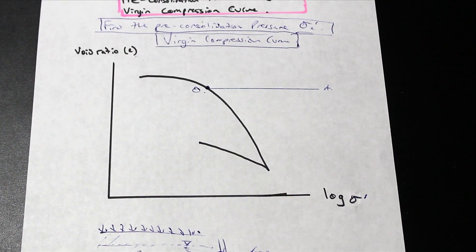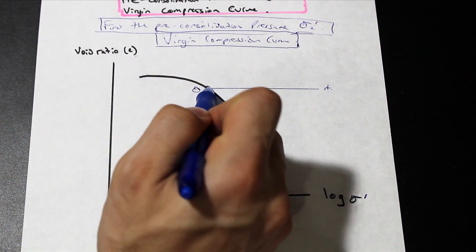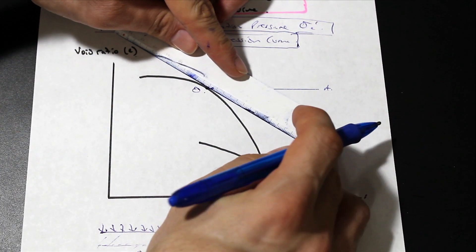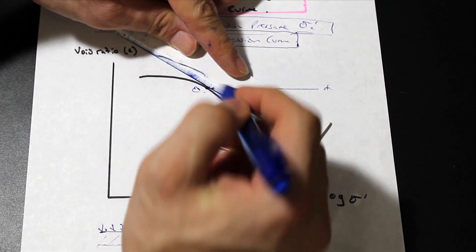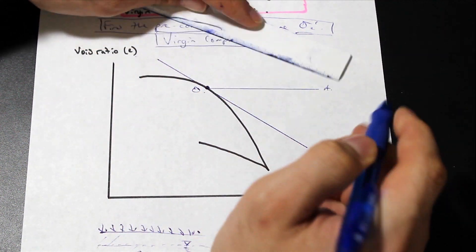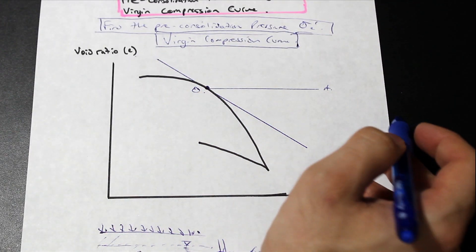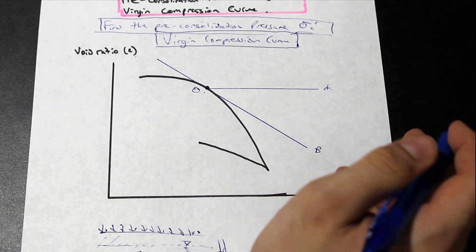Next step, we're going to draw a tangent line that is tangent to the curve at point O. So at point O, we're going to draw a tangent to this curve here that intersects point O. So that's going to be referred to as our OB line.